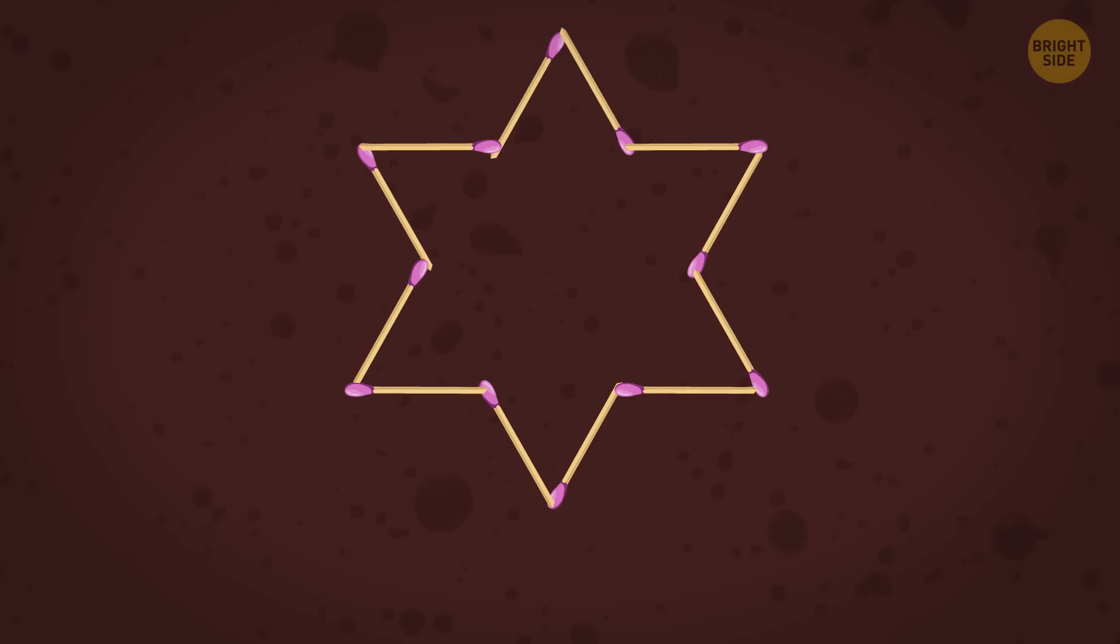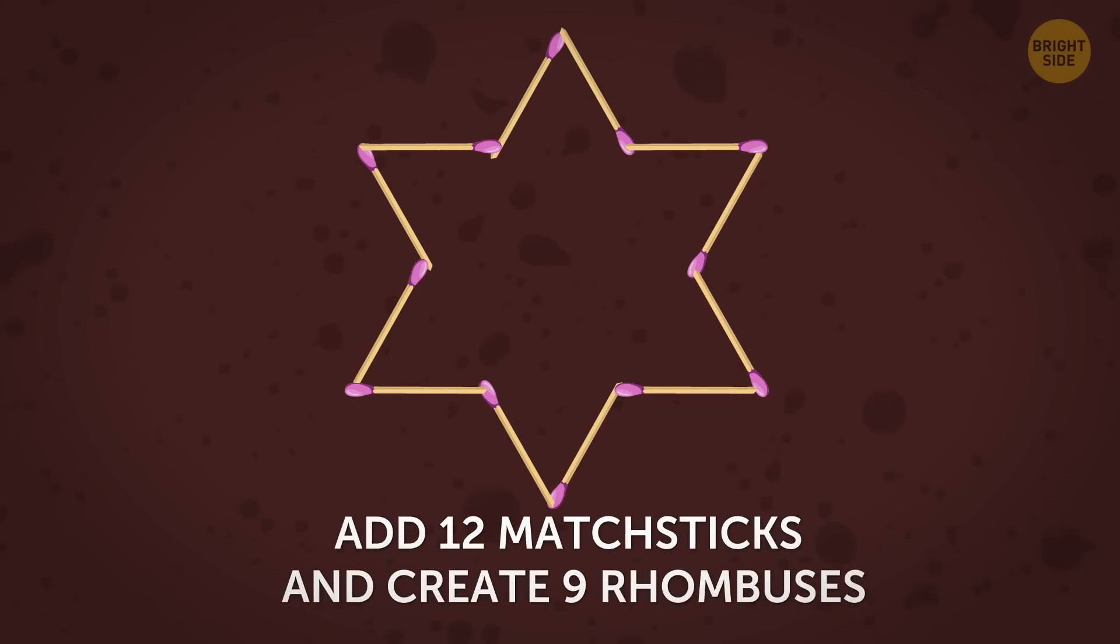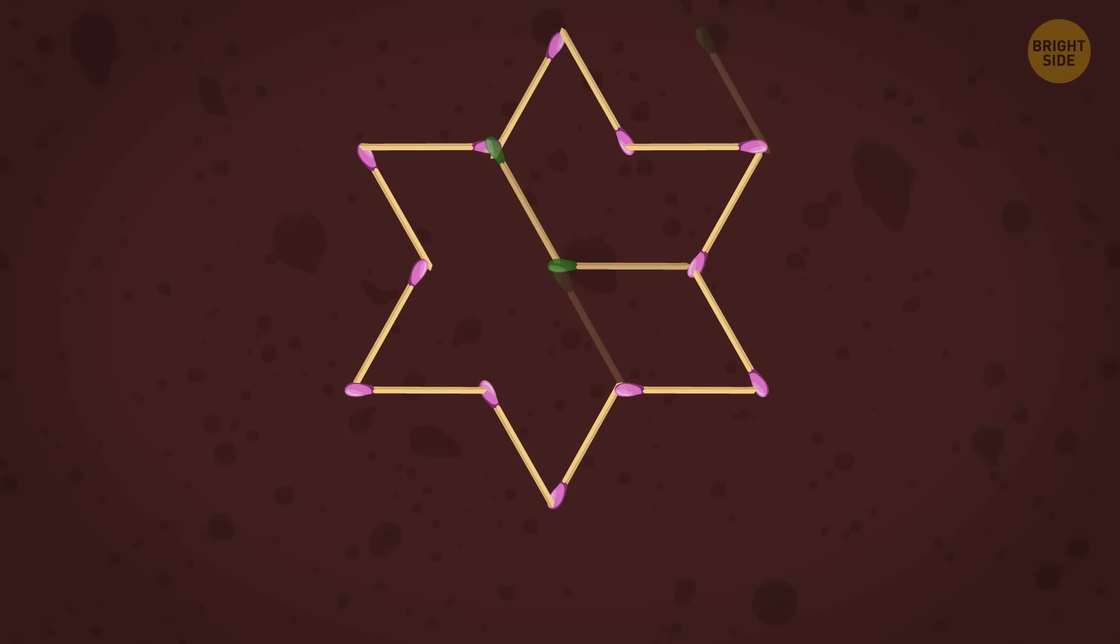These matches are arranged into the shape of a David star. The task is to add 12 matchsticks and create 9 rhombuses. Can you do that? Here's the complete solution.